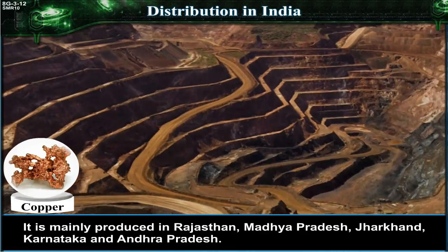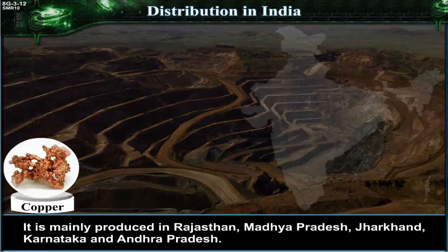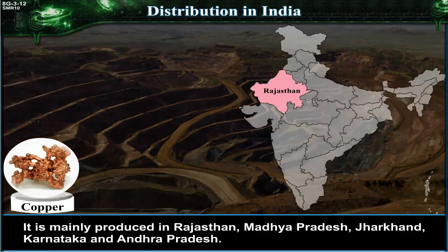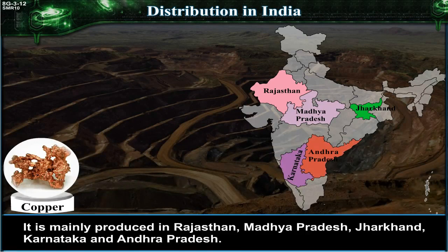Copper. It is mainly produced in Rajasthan, Madhya Pradesh, Jharkhand, Karnataka and Andhra Pradesh.